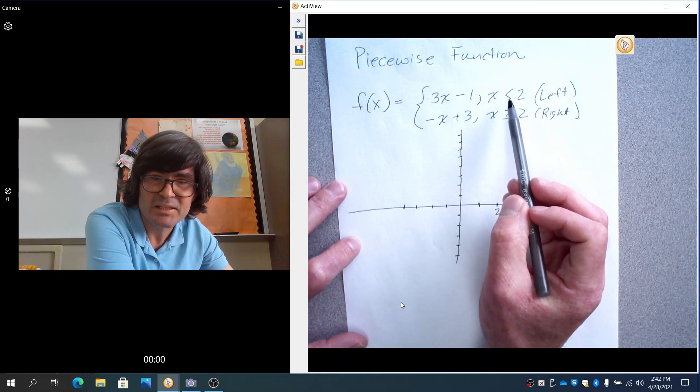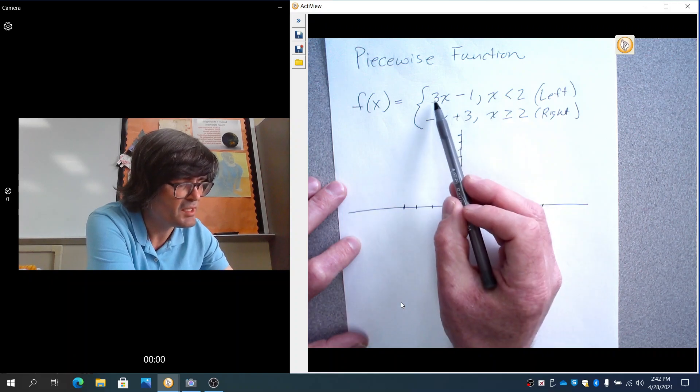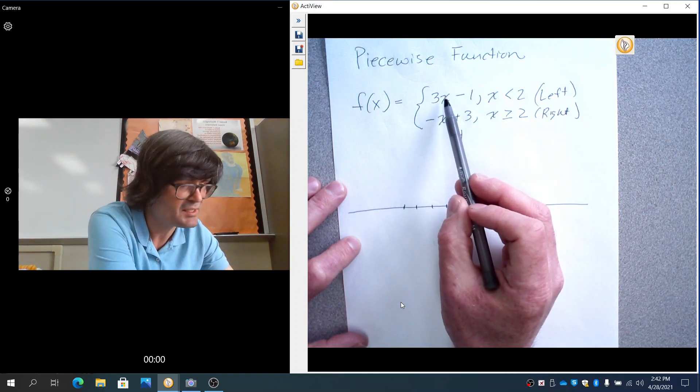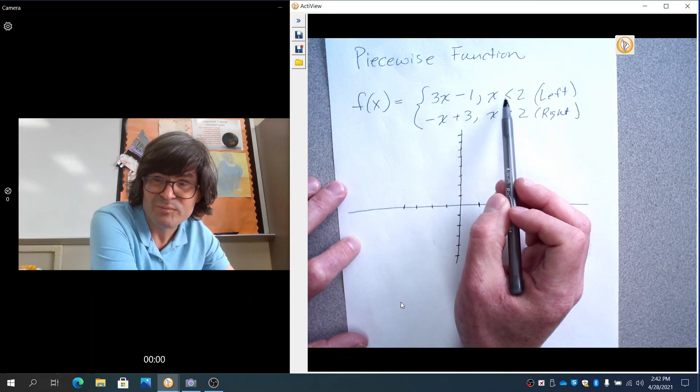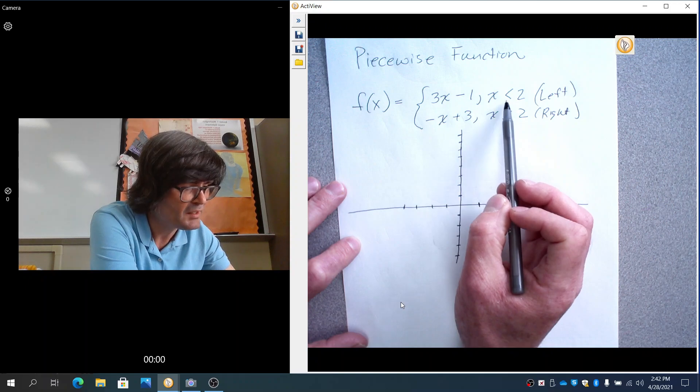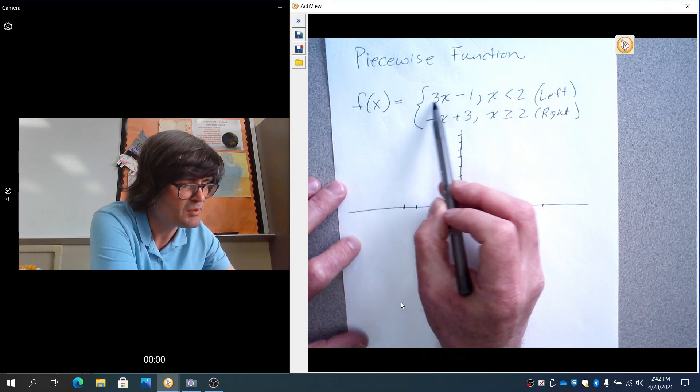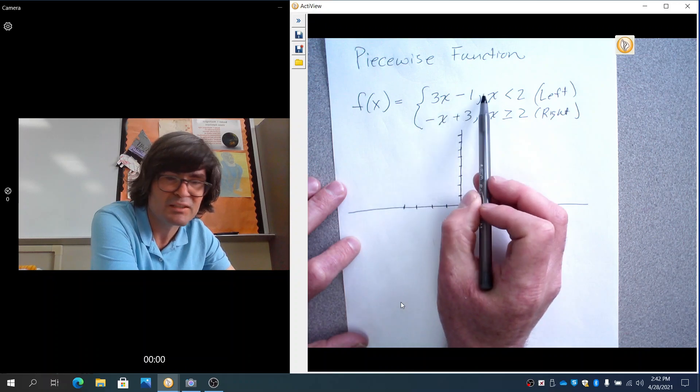So we'll start with the left piece. I'm going to pretend that 2 goes into this piece, even though it doesn't, because x is less than 2. We know that 1.999 would be on this piece, but not actually 2 itself. But despite that, let's just pretend 2 is on this piece and put it in here. 3 times 2 is 6. Minus 1 makes 5.